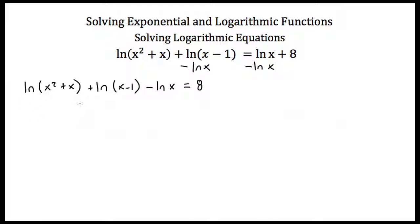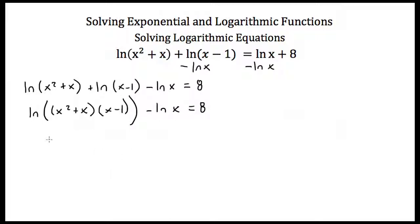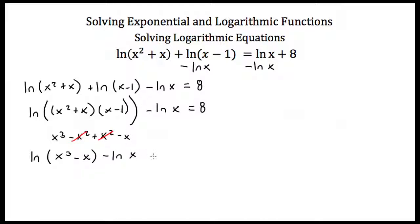Now that I have all my log terms on the same side, I'm going to combine them into one log using log properties. My first two logs — the natural log of x squared plus x and the natural log of x minus 1 — are added together, so I use the product property to make this the natural log of (x squared plus x) times (x minus 1). Multiplying these out: x squared times x is x cubed, x squared times negative 1 is negative x squared, x times x is positive x squared, and x times negative 1 is negative x. The negative x squared and positive x squared cancel, leaving the natural log of x cubed minus x, still subtracting the natural log of x, equal to 8.